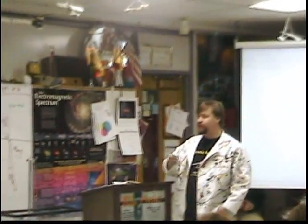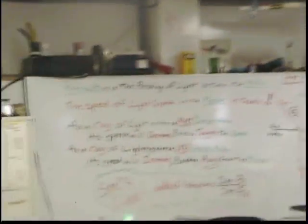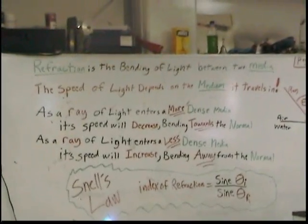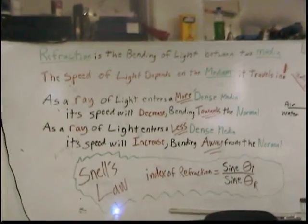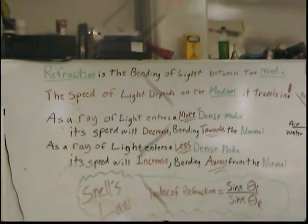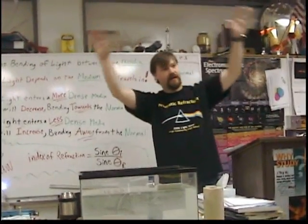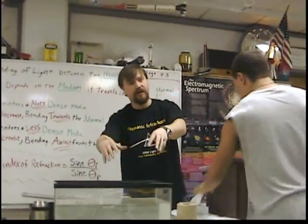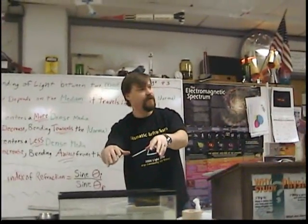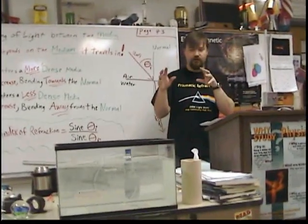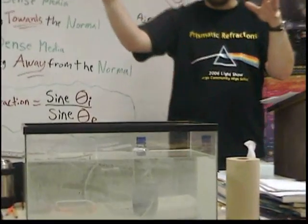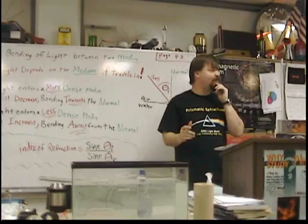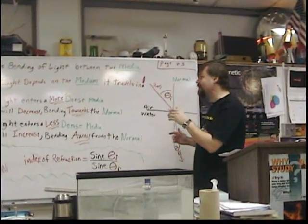The speed of light depends on the medium it travels in. When we were using the mirrors for the law of reflection, we just used air. Now to see refraction, we need to have light travel through different mediums. Air fills this room, and water fills this fish tank. Those are the two media we are going to use to show light going through — air and water. When this happens, we get the bending of light.